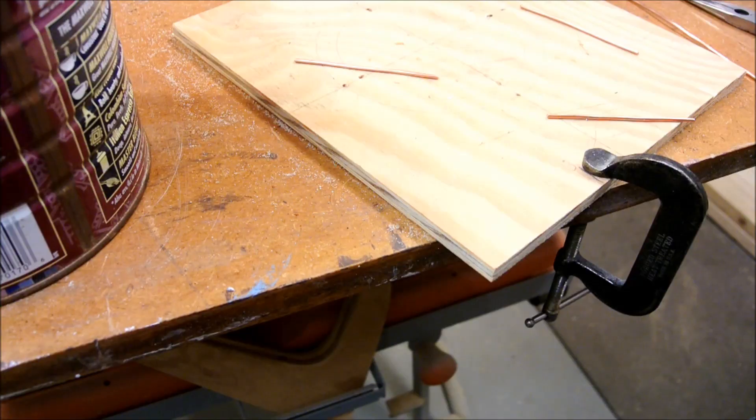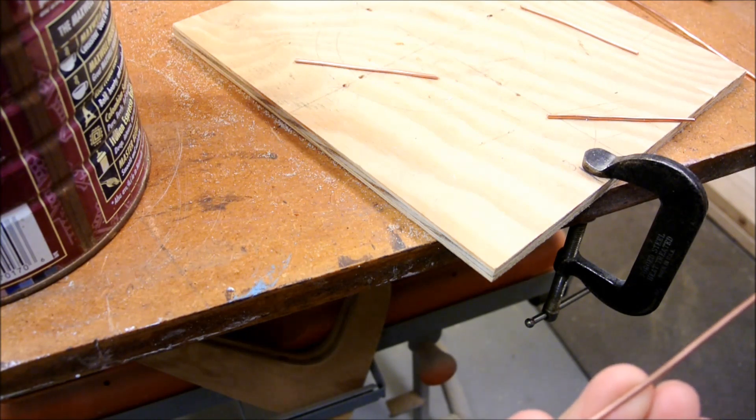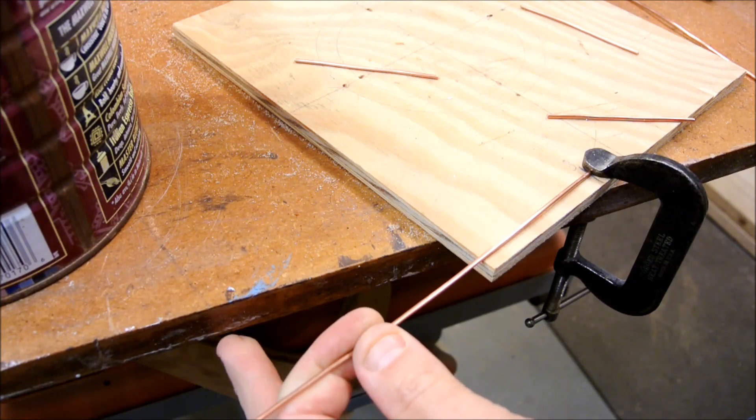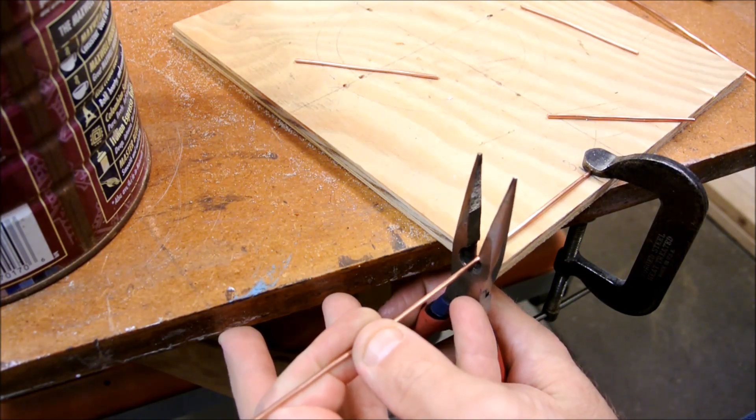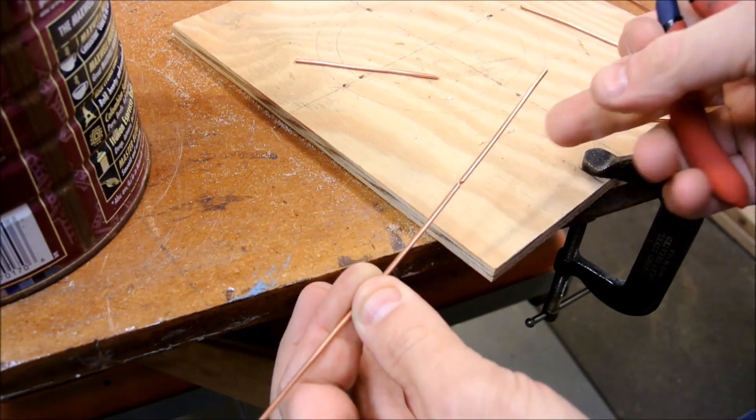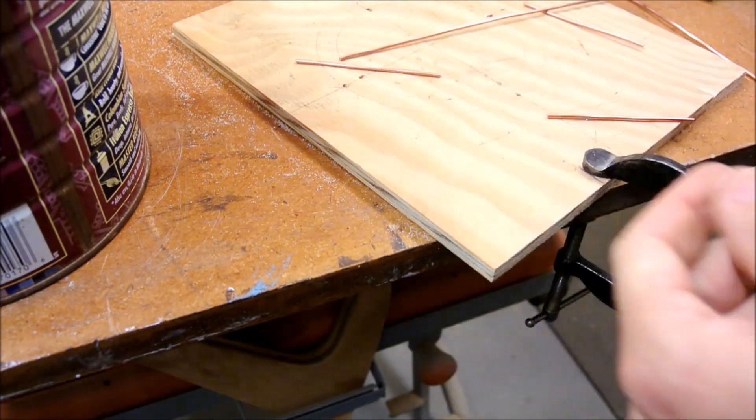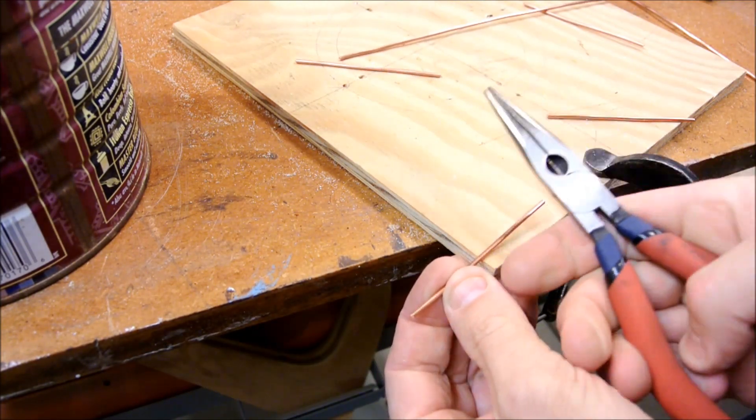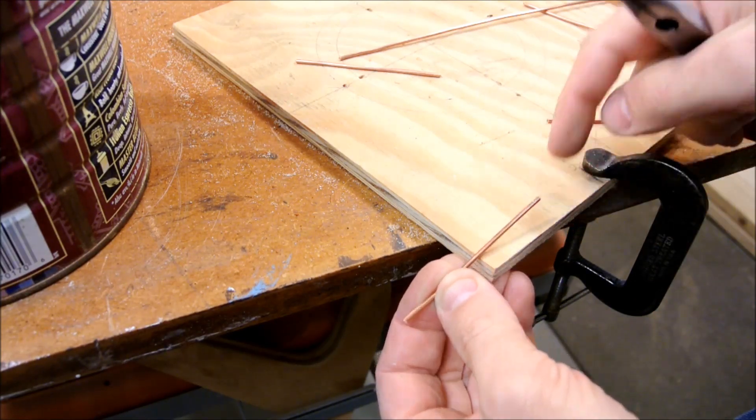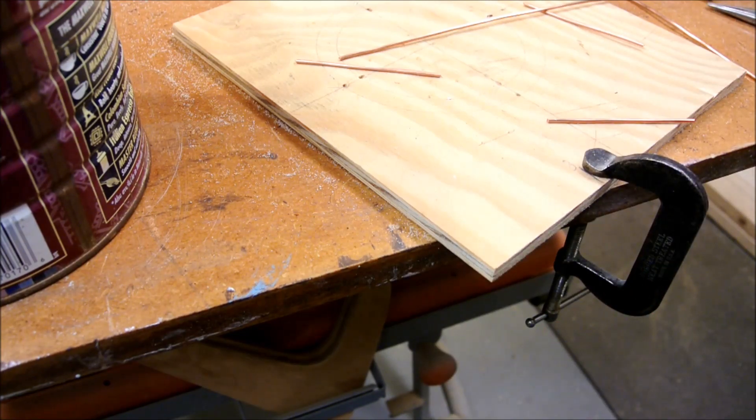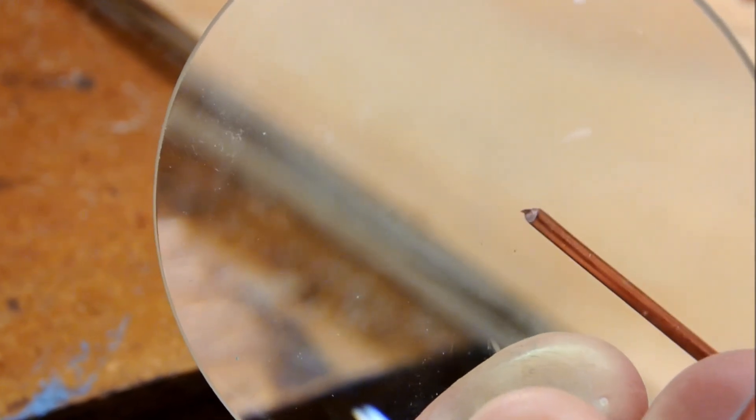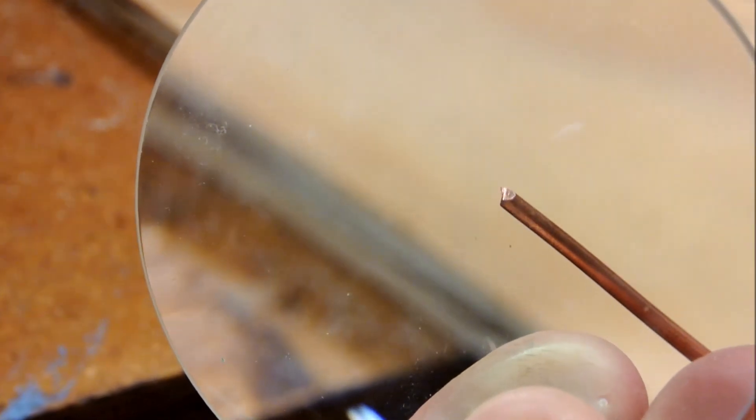Now this might seem a bit simple to you, but this is actually rather important: cutting consistency. If you're going to make models like these, you have to be very consistent with your measurements. All the pieces are exactly the same. Also, I'm orienting the cuts that I make with these little needle nose pliers the same way. So that, here I'll focus.